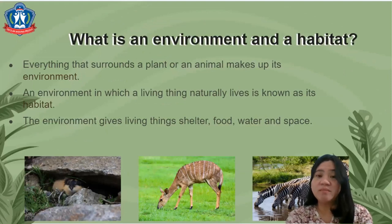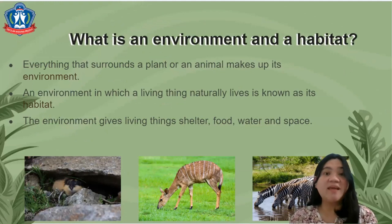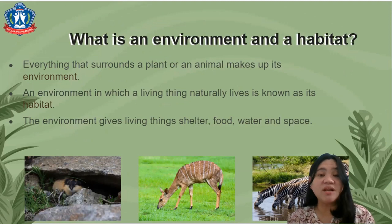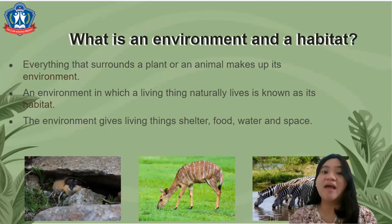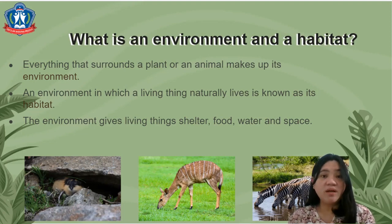What is an environment and habitat? Everything that surrounds a plant or an animal makes up its environment. An environment in which a living thing naturally lives is known as its habitat. The environment gives living things shelter, food, water, and space.